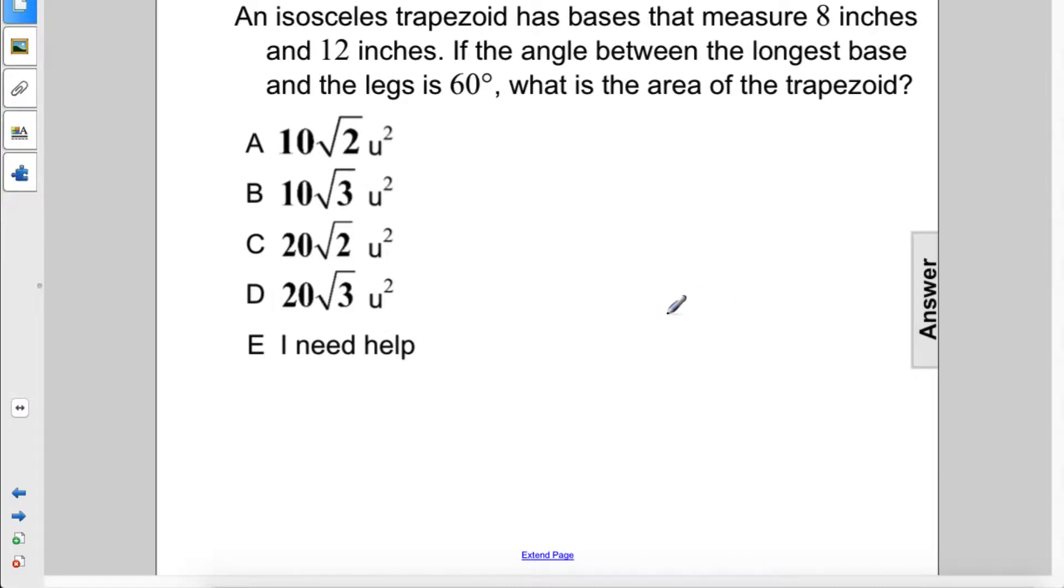An isosceles trapezoid has bases that measure 8 inches and 12 inches. If the angle between the longest base and the legs is 60 degrees, what is the area of the trapezoid?